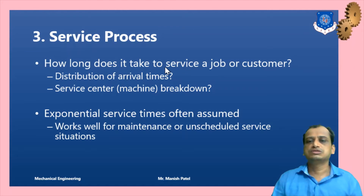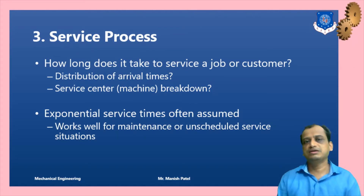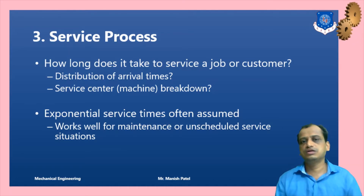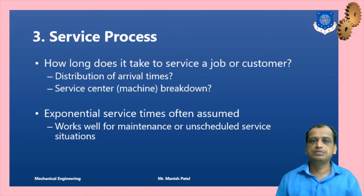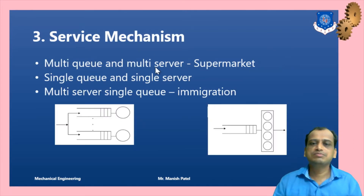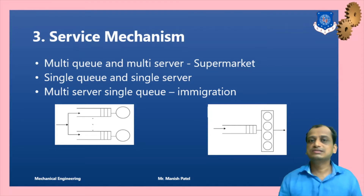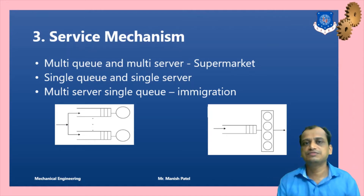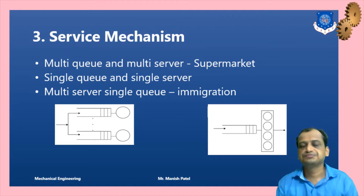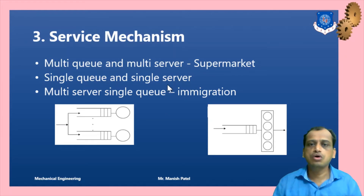The third characteristic is the service process — how long does it take and what is the pattern of service? For the distribution of service centers or servers, exponential service time is assumed. Remember: for arrivals it is the Poisson process; for service it is exponential. The service mechanism includes single server, multi-server, parallel services, and parallel queues. Examples include immigration counters, bank counters, dentists for single server, and service stations for multiple servers.